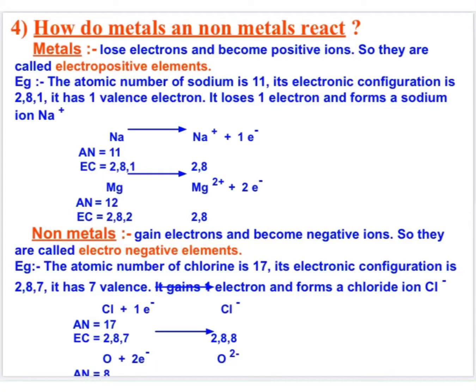Hello students. We studied physical and chemical properties of metals and non-metals. Now we are going to study how metals react with non-metals. First of all, metals are the elements which have one, two, or three electrons in their outermost orbit. In order to acquire octet configuration, they will lose these electrons and form positive ions.